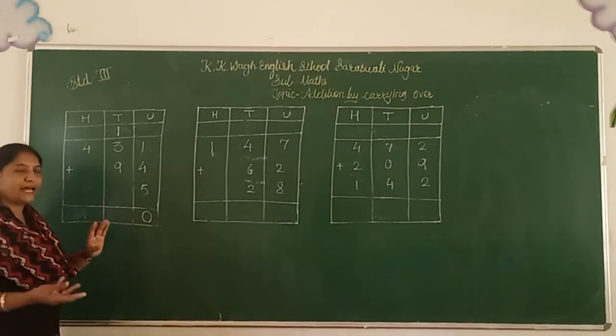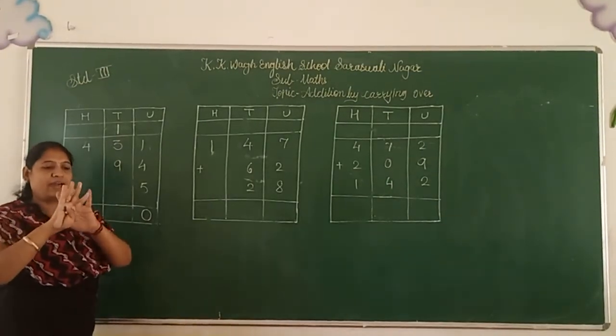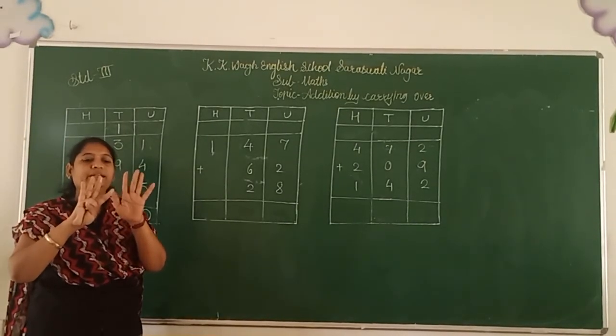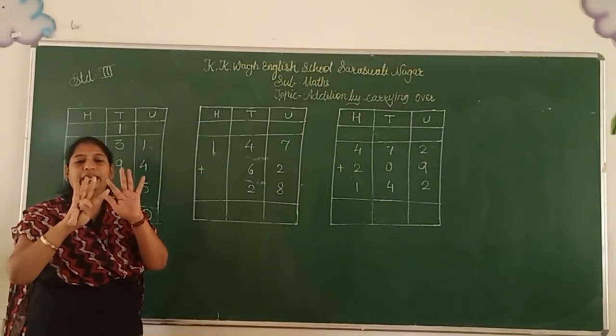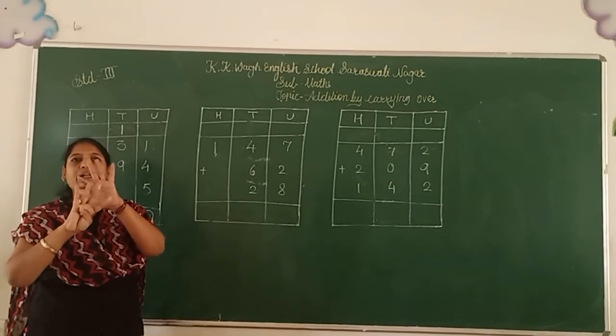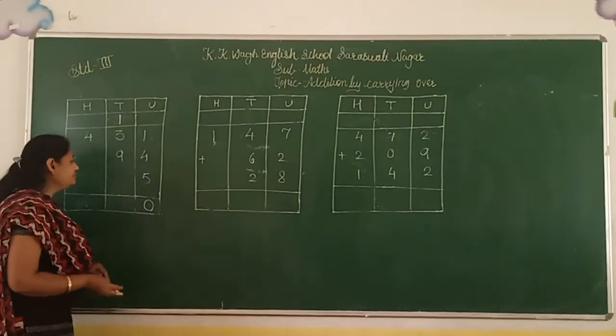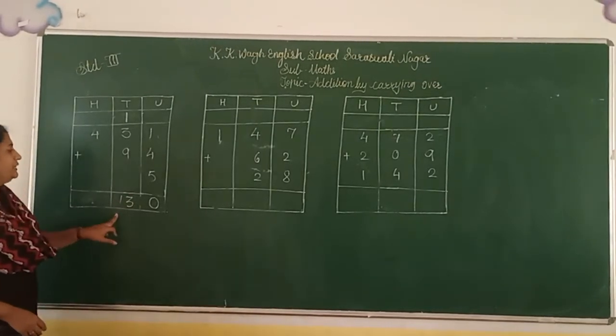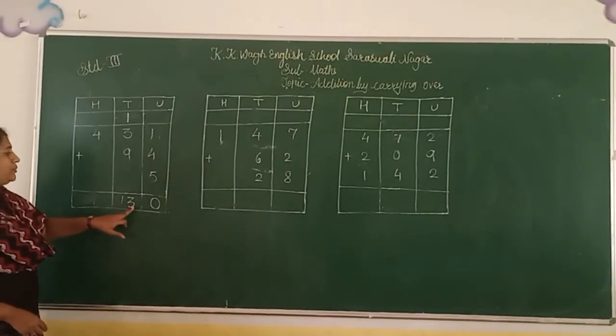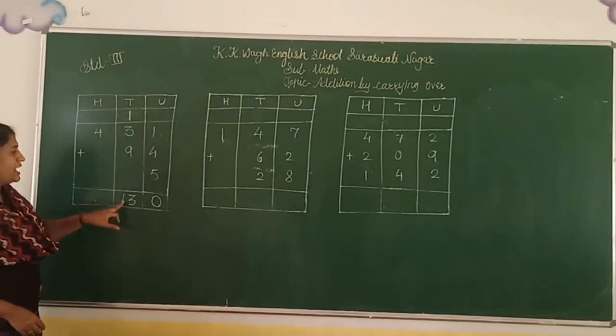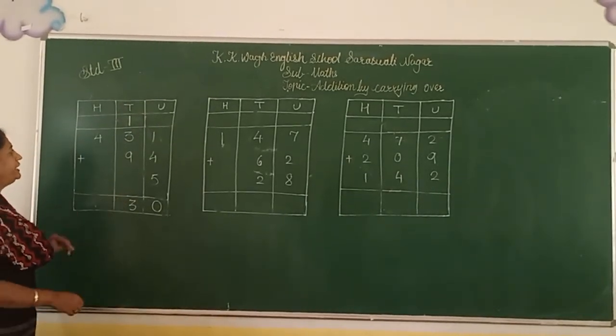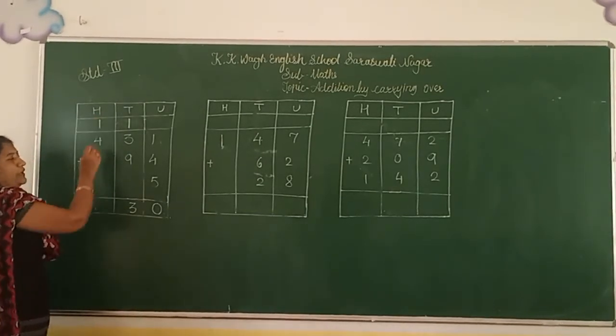4 plus 9 equals 13. So we write here 13, but in 13, 3 place is the 10th place and 1 place is the 100th place. So we get 1 in 100 place. Then 1 plus 4 means 5.